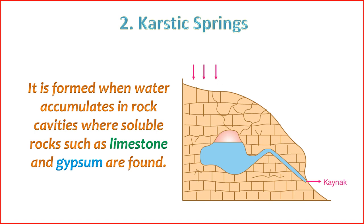Karstic springs are a type of spring that originates from karst topography, a distinctive landscape formed by the dissolution of soluble rocks such as limestone, dolomite, and gypsum. 1. Formation — karstic springs are formed in regions with karst topography, where soluble rocks are dissolved by the action of water, creating underground conduits, cavities, and channels.